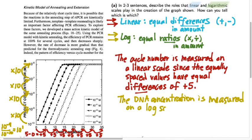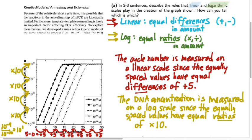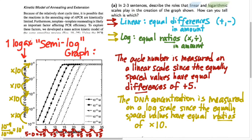So in this graph, the cycle number in PCR is being measured on a linear scale, while the DNA concentration is being measured on a logarithmic scale. On that log scale, the tick marks are separated by equal ratios of multiplication by 10. Because this graph has one linear scale and one logarithmic scale, scientists will frequently call this a semi-log graph — with the log scale on the vertical axis and the linear scale on the horizontal axis.